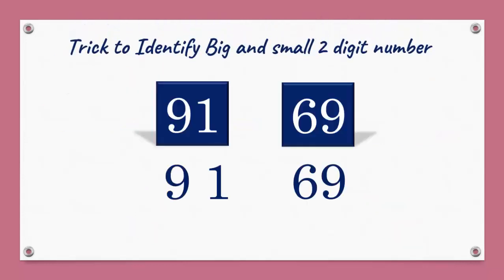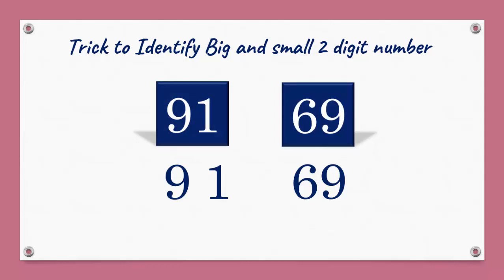How to identify big and small numbers in two digits? Here we have the numbers 91 and 69. What we have to do is look at the first digit of each number — that is 9 and 6. Which number is bigger? Yes, 91 is big and 69 is small.